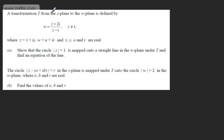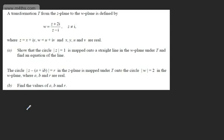In this question, we're told a transformation t from the z-plane to the w-plane is defined by w equals z plus 2i over z minus i, where z cannot equal i. We're told z equals x plus iy, w equals u plus iv, and x, y, u, and v are real. In part A, we need to show the circle mod z equals 1 is mapped onto a straight line in the w-plane under t, and find an equation of the line.